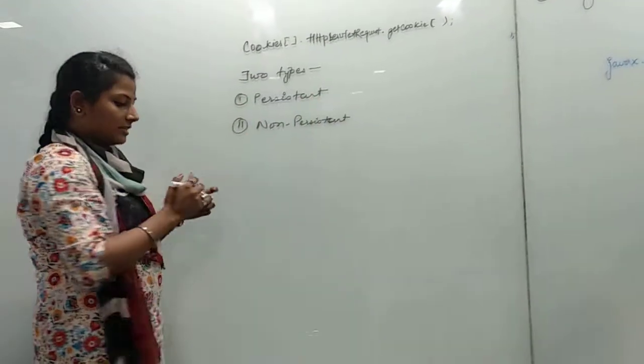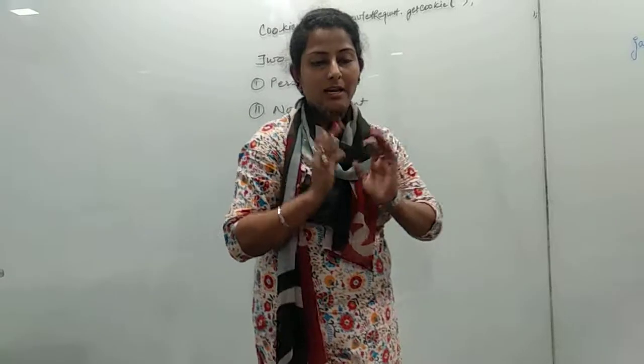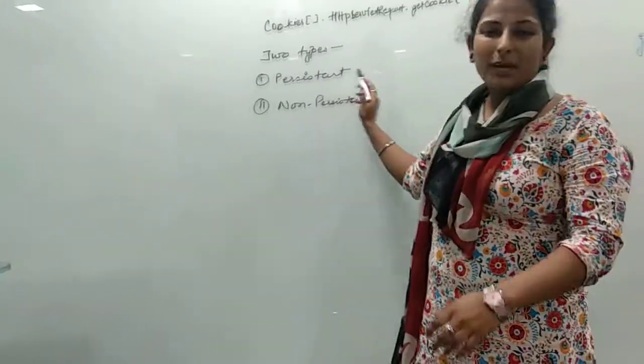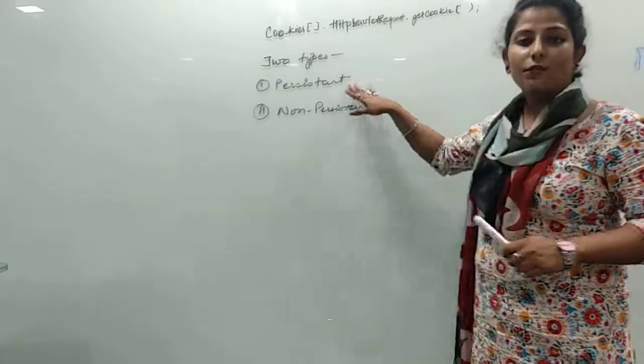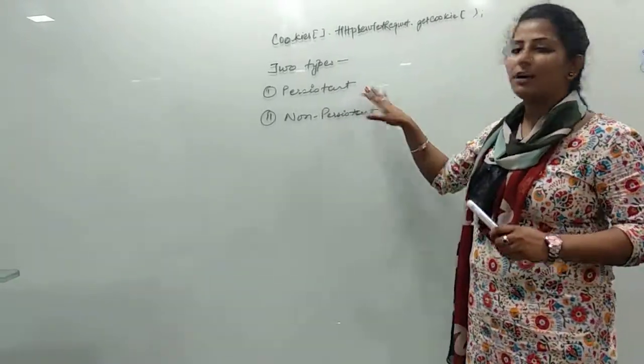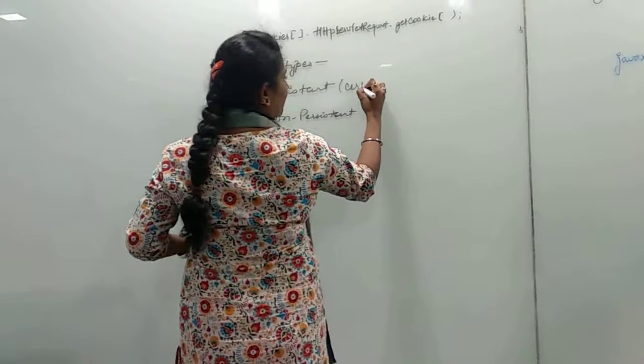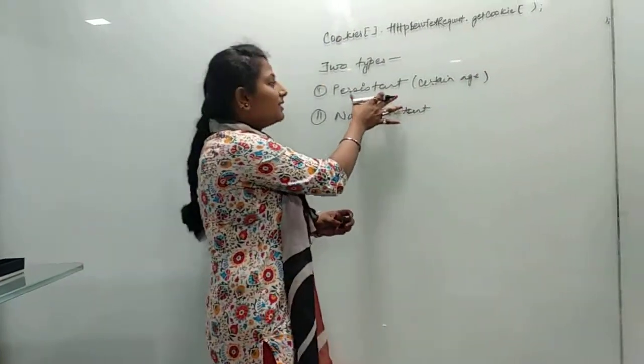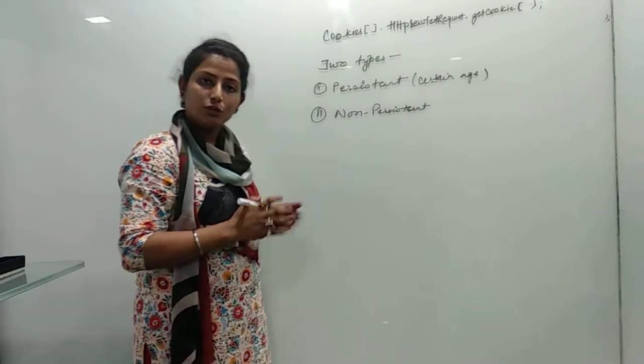As the name suggests, persistent means those cookies which live after we have closed the browser also. But it does not stay permanently. It stays for a certain limit of time, certain age. But it remains there once we have closed the browser also.